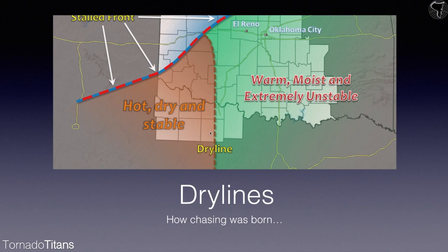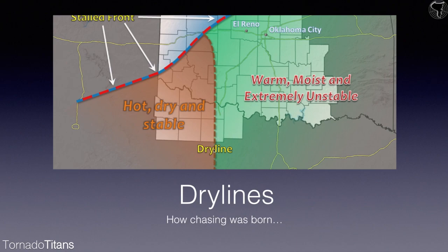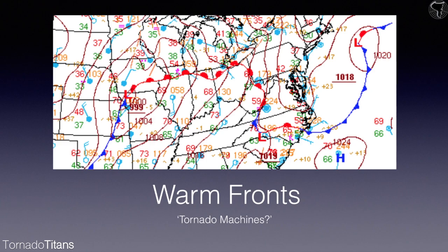Dry lines do come with a boom-or-bust problem. Convergence along this boundary could be weak, and you could end up having issues getting storms to form. The drier air can also mix in east of the dry line, creating high-base storms initially. But on days like El Reno, you can get 70-degree dew points right up against 20-degree air, 6,000 CAPE, great winds — the storm goes up, begins to spin immediately, and does crazy things. For great photography, dry lines are very hard to beat.